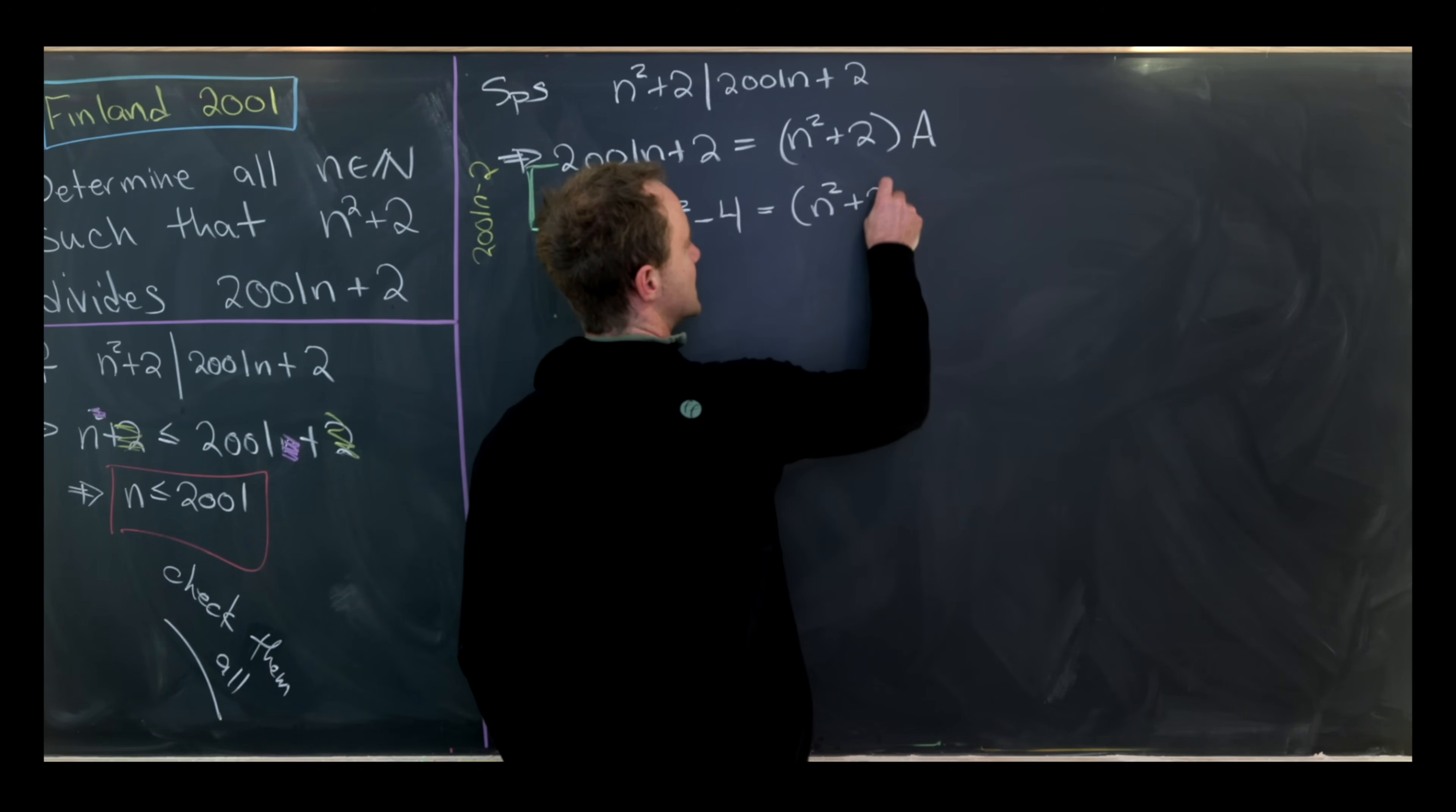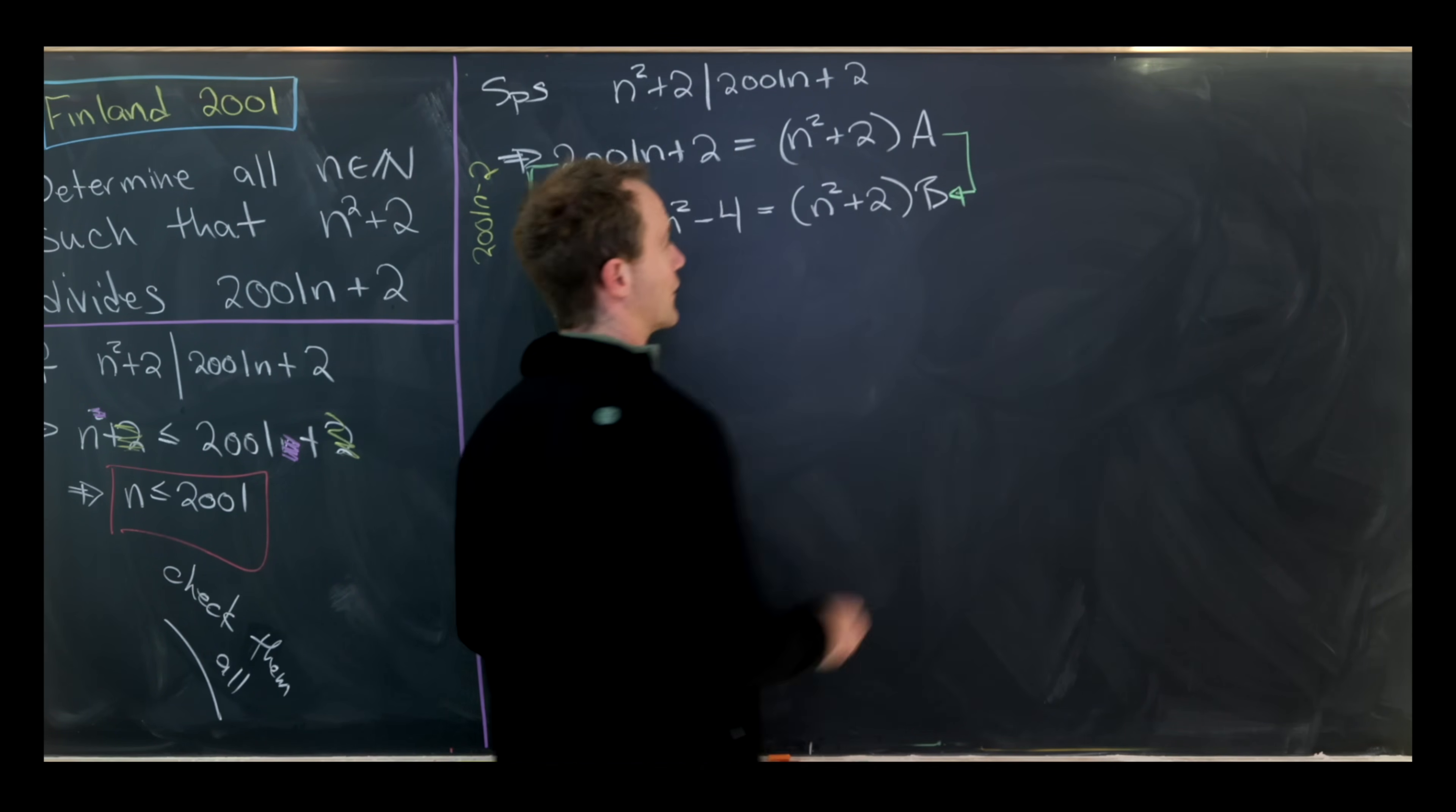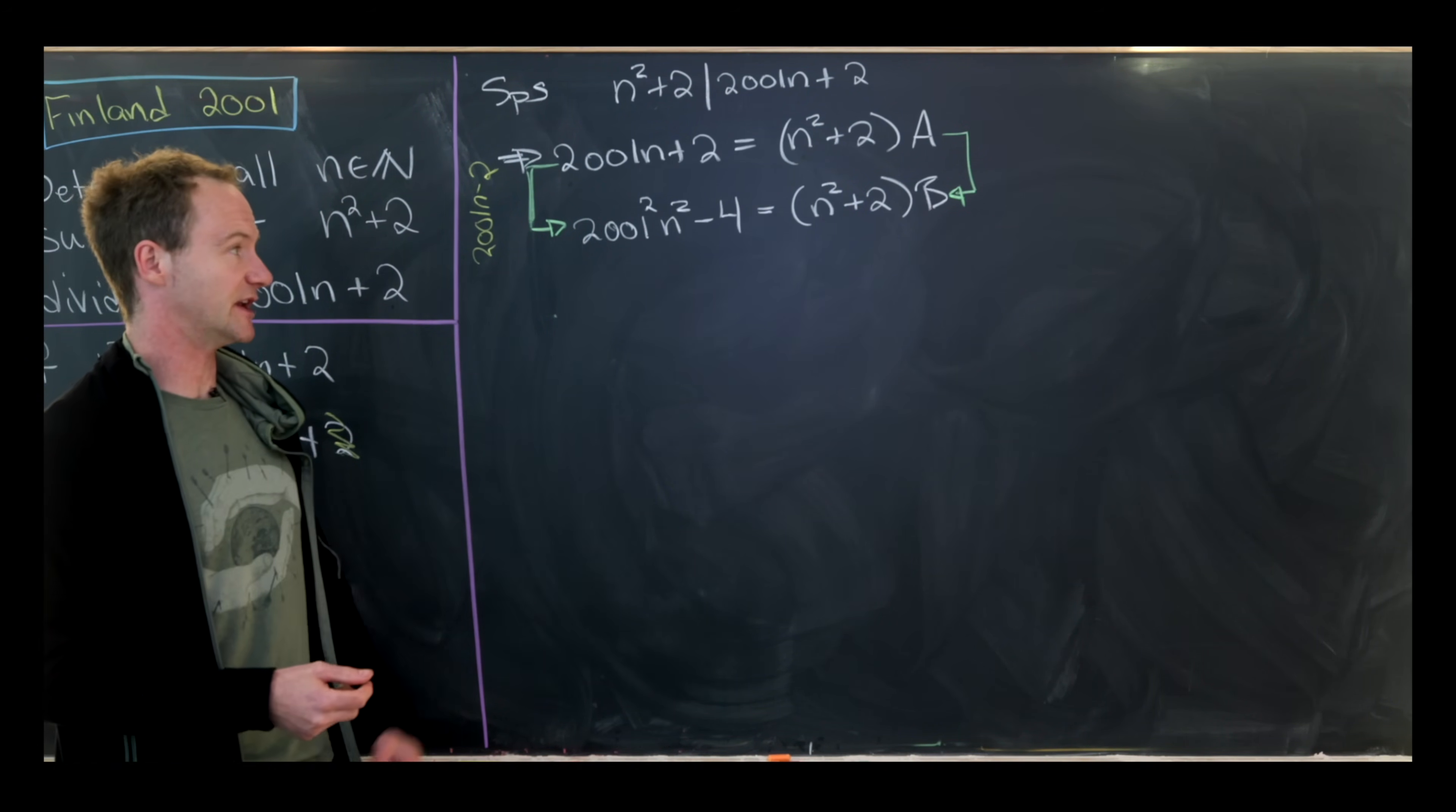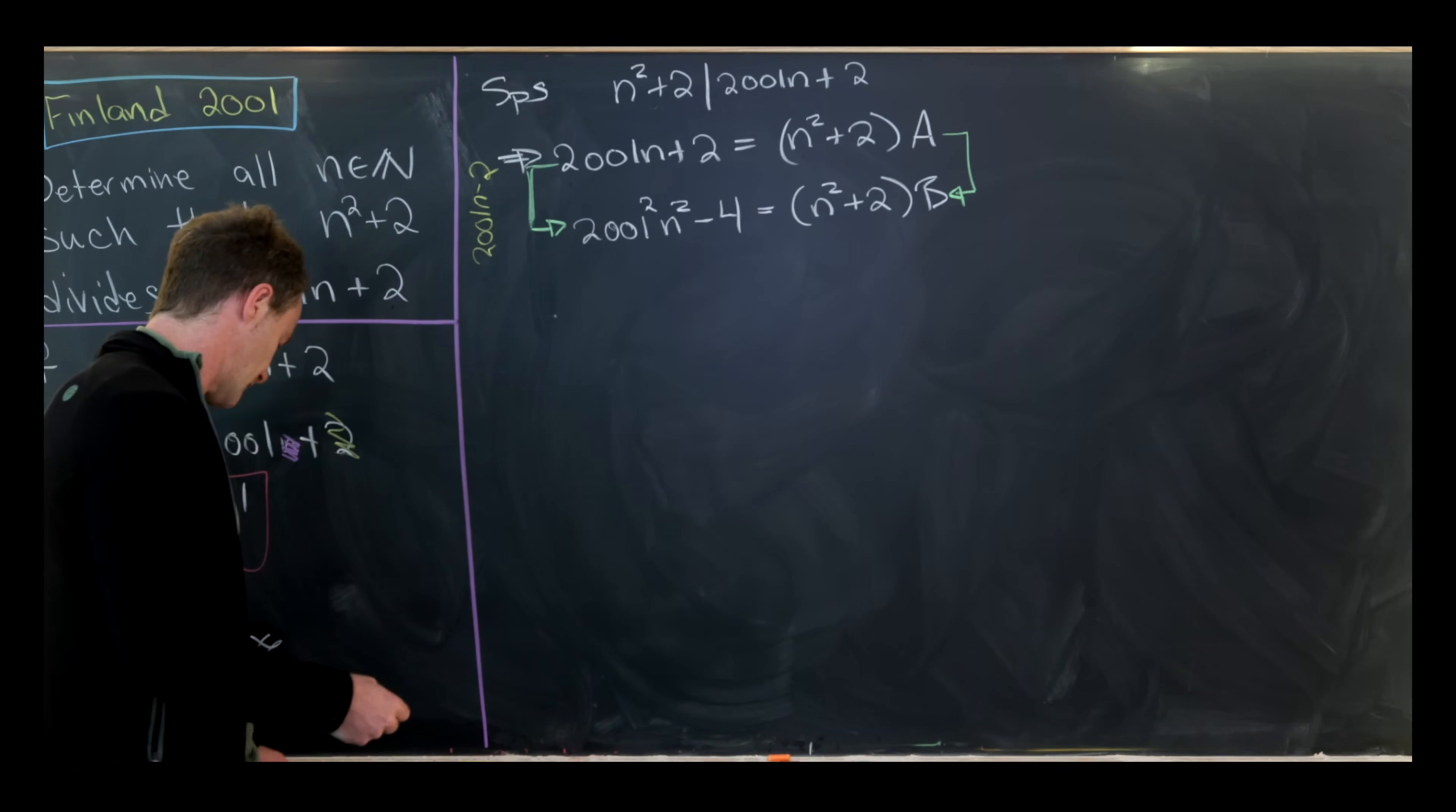And then what do we have over here on this right-hand side? I'll write this as n² + 2 times some number B, where I'm doing the same product over here on the right-hand side because I'm creating an equivalent equation, but I'm absorbing this 2001n - 2 into the A to turn it into B. So this is looking good.